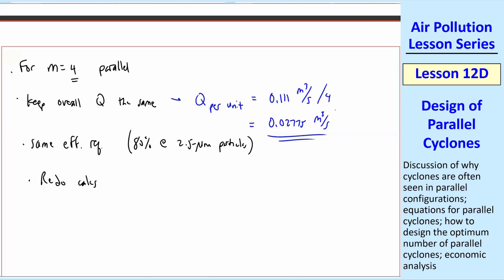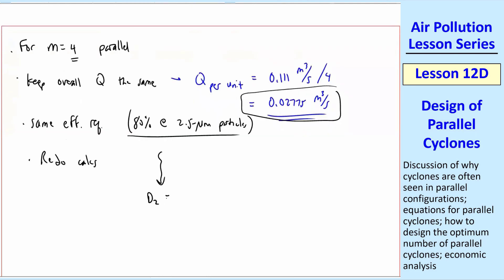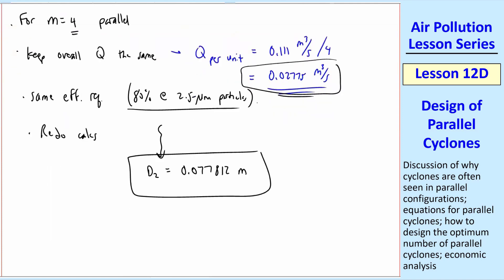So you redo the calculations that we had above. The only thing that really changed is this Q because we still have the same efficiency. We're doing all that same calculations. And I'm not going to show that. You could do this for practice. Just repeat everything above except with a different Q, and you get a different diameter required. And we get 0.077812 meters, which is about 1.6 times smaller than the one big cyclone, which, remember, was 0.124 meters. One thing I want you to realize is that this is not the original D2 divided by four. It's more like a factor of about 1.6. And that's because these equations are certainly not linear. So it's not quite that simple. You've got to go through all the calculations again.